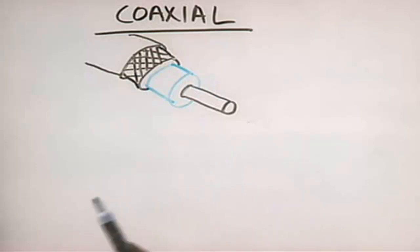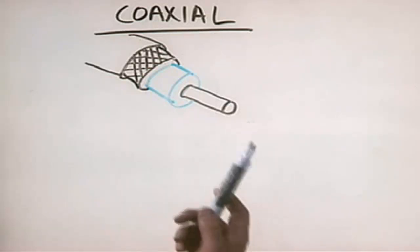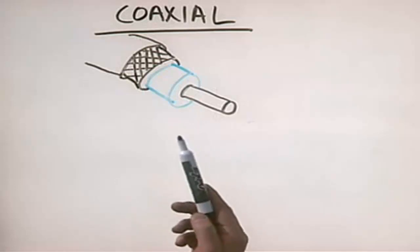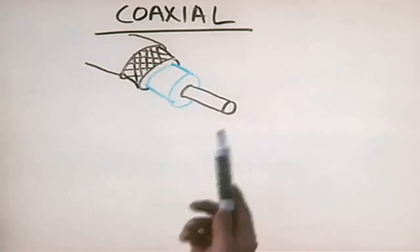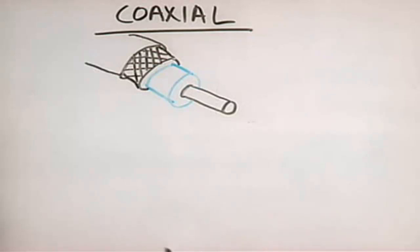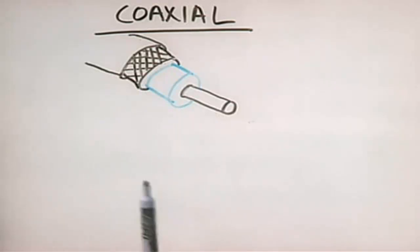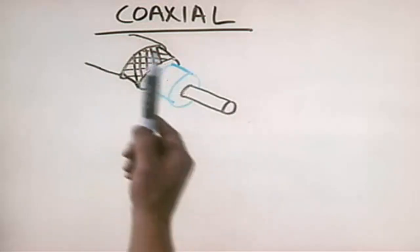They look the same, but the electrical properties are different. I've on occasion seen folks try to use a piece of cable TV cabling for networking, and it kind of works for a minute, but then they get all kinds of errors and problems. Coaxial is an older technology and isn't used that much anymore. There is still a fairly large installed base, but it's quickly disappearing.